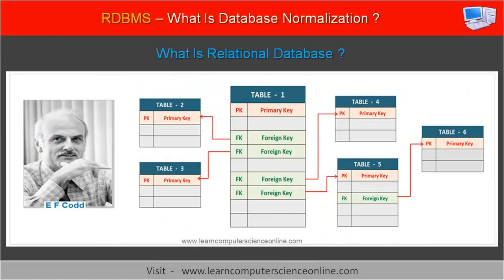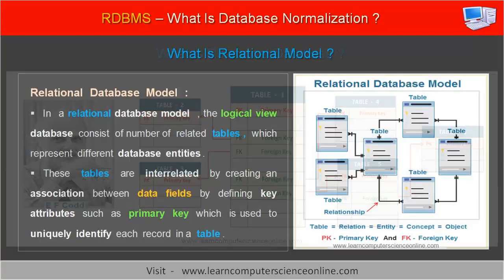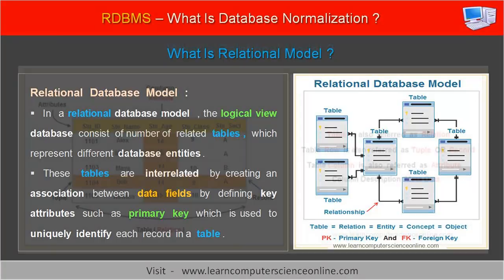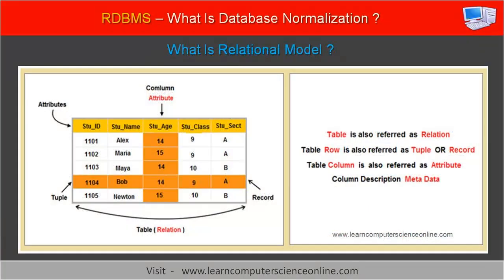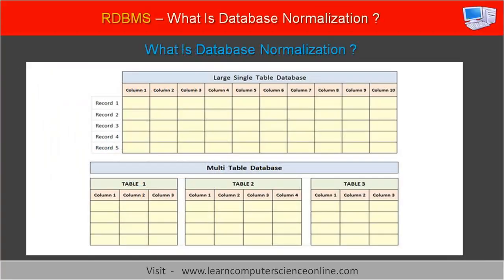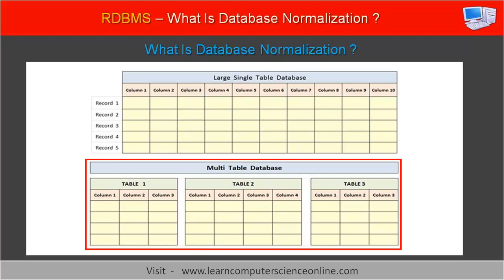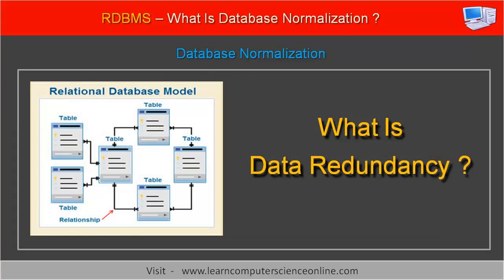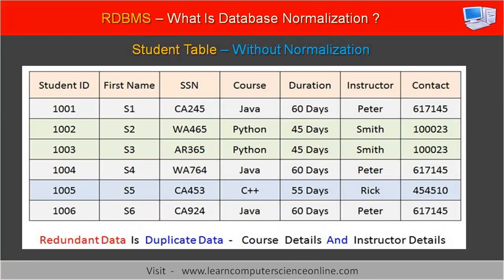The term database normalization is used in the context of relational databases. The relational database model was invented and proposed by British computer scientist E.F. Codd. In a relational database, the logical structure consists of a number of interrelated tables, and each table represents a single database entity. Database normalization is simply a process of decomposing large tables into smaller but more meaningful tables. Large tables essentially combine data of multiple database entities, and duplication of data at multiple places becomes a major problem. The presence of duplicate data in multiple records is referred to as redundant data.